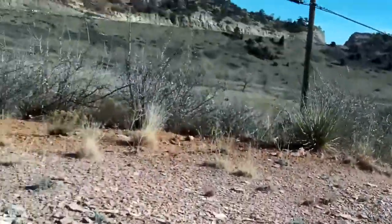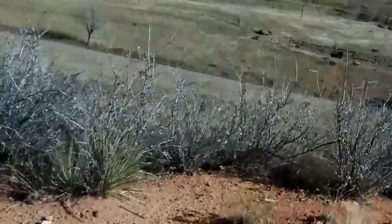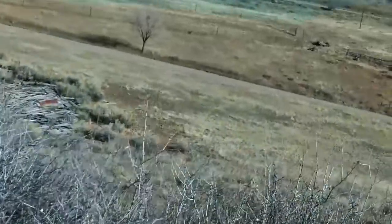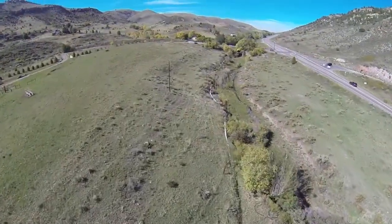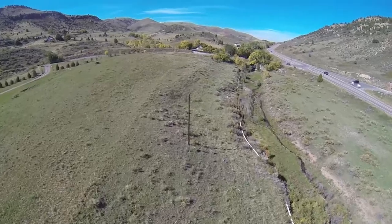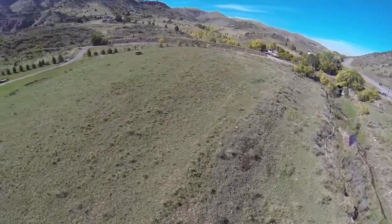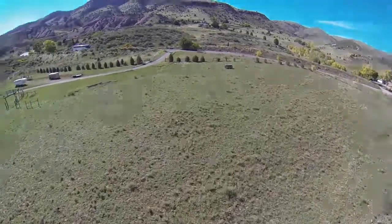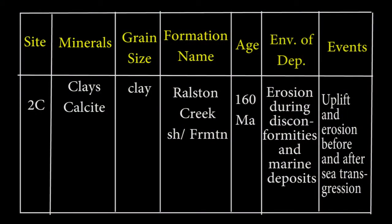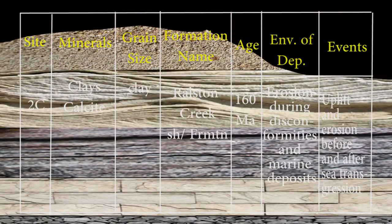Welcome back geology fans. Before we leave our second site, we need to investigate the formation in the valley east of the lichens formation. Ralston Creek is below us and runs through this easily eroded shale unit, which coincidentally enough is called the Ralston Creek Shale. We note this on our chart as 2C Ralston Creek Shale, with disconformities at its bottom and top contacts.